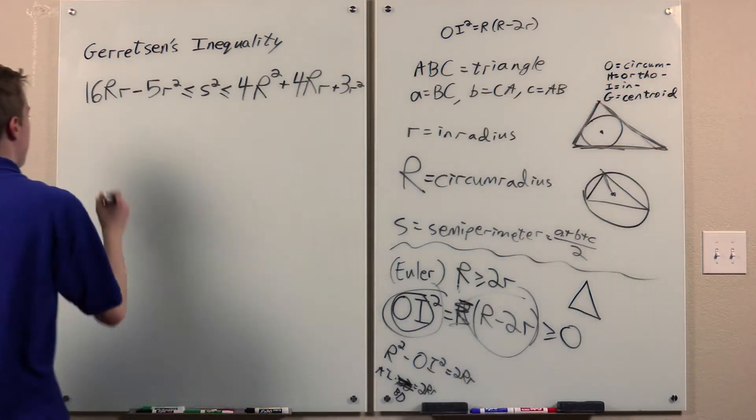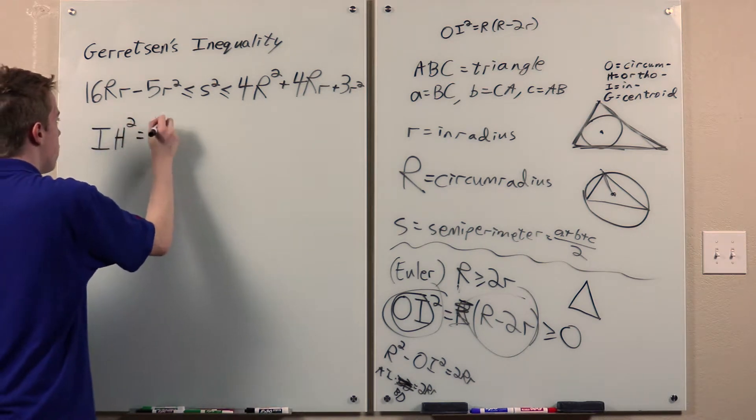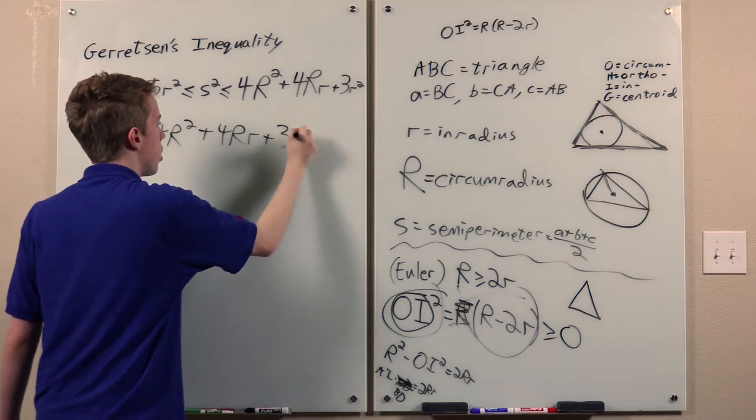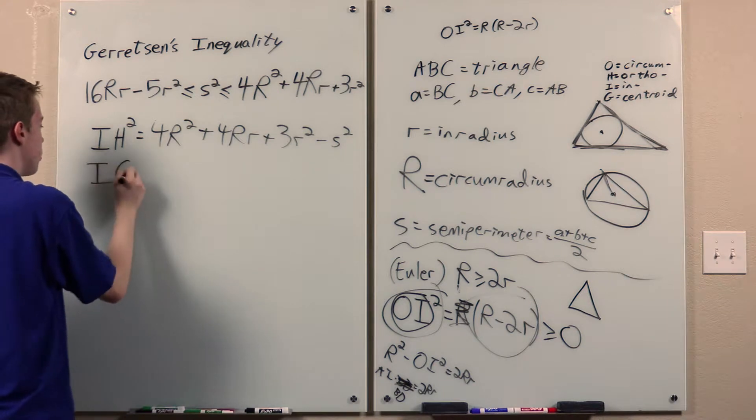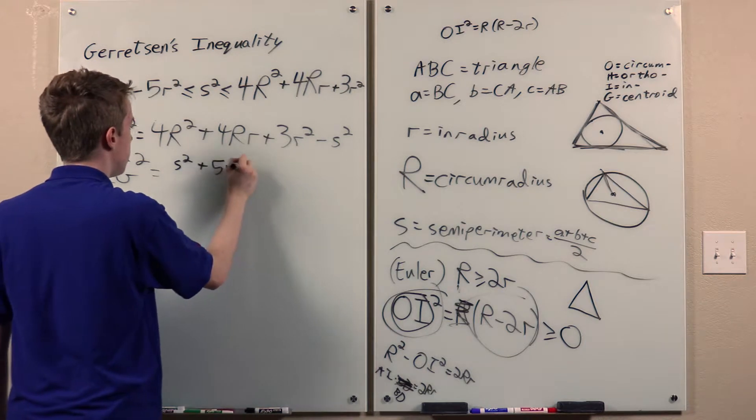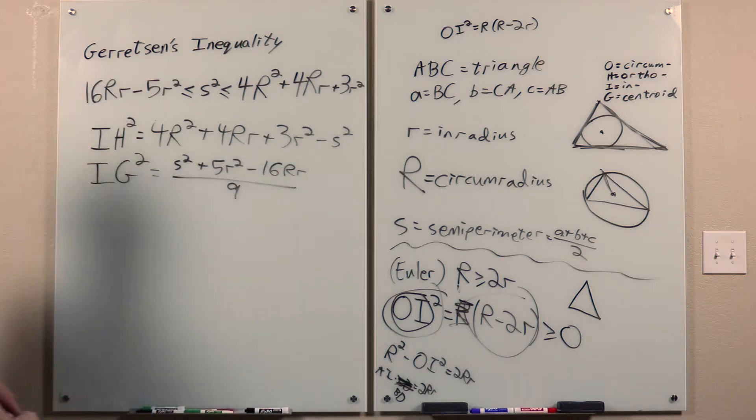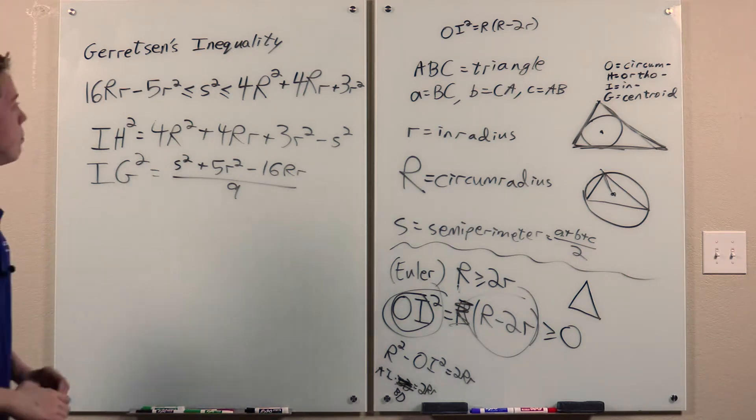Then, I claim that IH squared equals 4 big R squared plus 4 Rr plus 3 little r squared minus s squared, and IG squared equals s squared plus 5 little r squared minus 16 Rr over 9, which immediately implies the desired result.